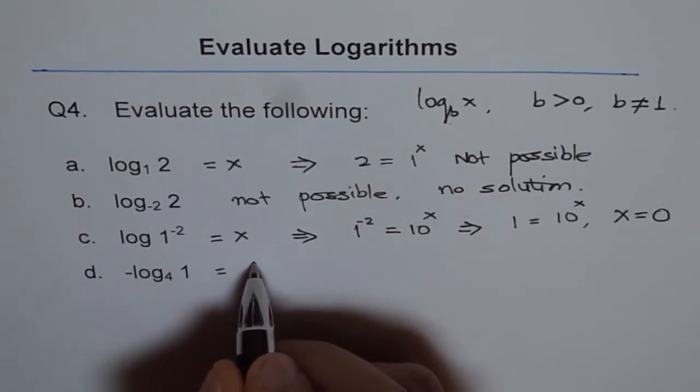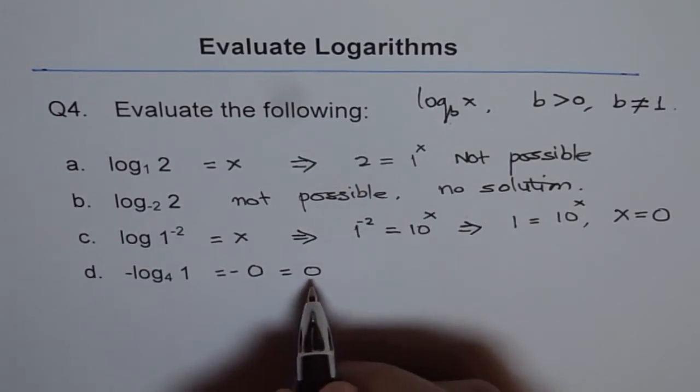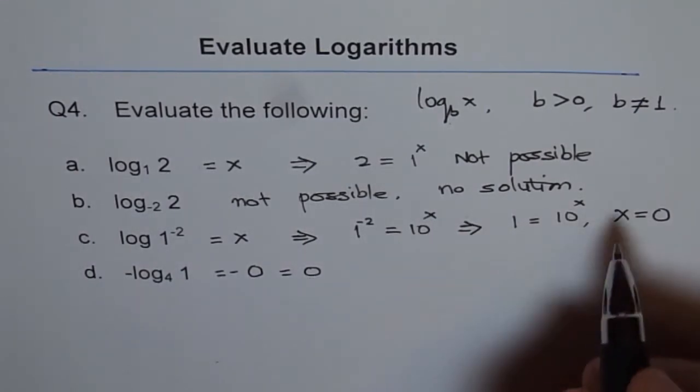So we get this as 0. And -0 or 0 is the same thing. So the answer is 0. So base could be anything of 1 is always 0, as we saw here.